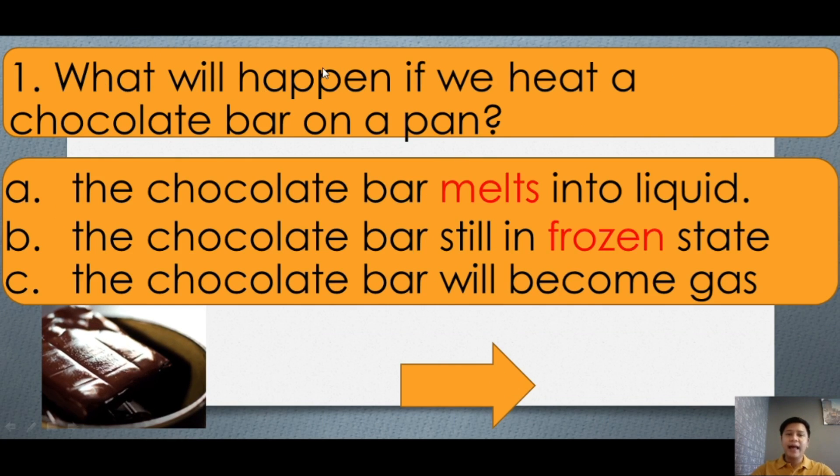What will happen if we heat a chocolate bar on a pan? So chocolate bar, what does it mean? This is the chocolate bar, and then pan, this is the pan. So what will happen? A, the chocolate bar melts into liquid. B, the chocolate bar is still in frozen state. Or C, the chocolate bar will become gas. What is the correct answer?